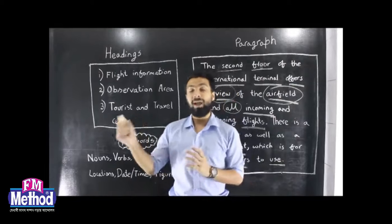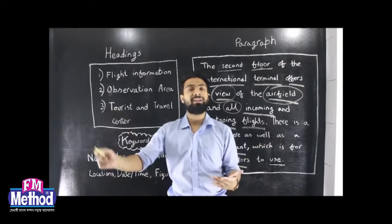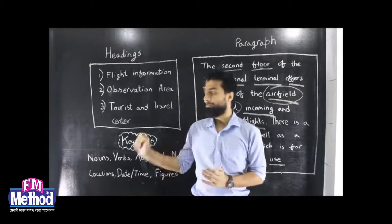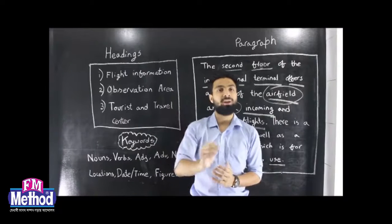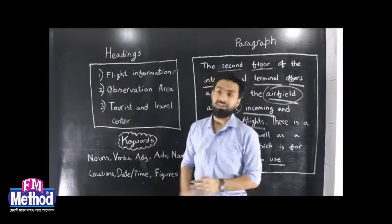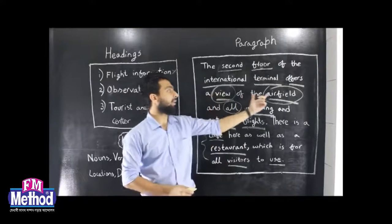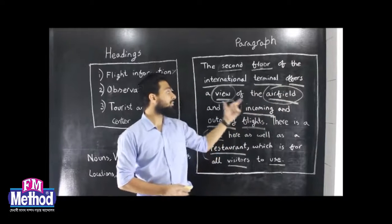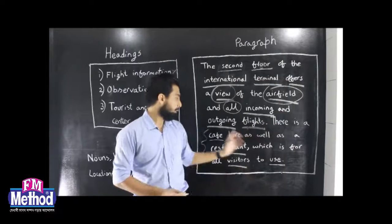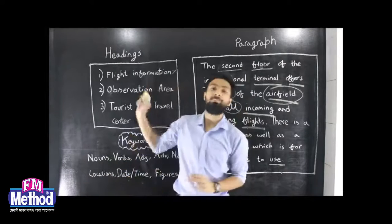Looking at incoming and outgoing flights, if the heading is 'flight information,' we would expect specific flight details like times. But that is not mentioned. Next, there is 'observation area.' An observation area is where you can see the airfield and view incoming and outgoing flights. So that is a potential answer.